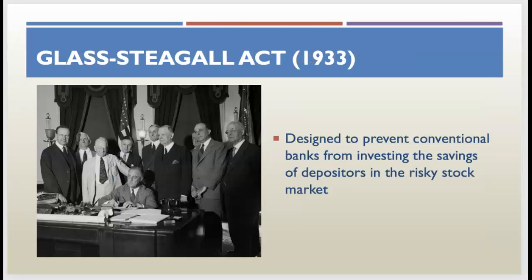The next thing FDR is going to do is get Congress to pass the Glass-Steagall Act. This prevented conventional banks from investing depositors' savings into the stock market, calling for a separation between investment banking and commercial banking. Banks could no longer put customer deposits into the stock market. It also gave the Federal Reserve more authority to intervene during financial emergencies.